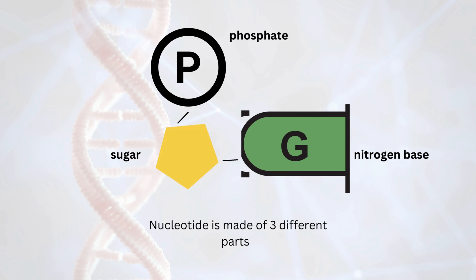The first part is a phosphate group, represented by P. The second component is a molecule of a five-carbon sugar, pentose sugar. The third component is an organic base, which gives each nucleotide its particular character.